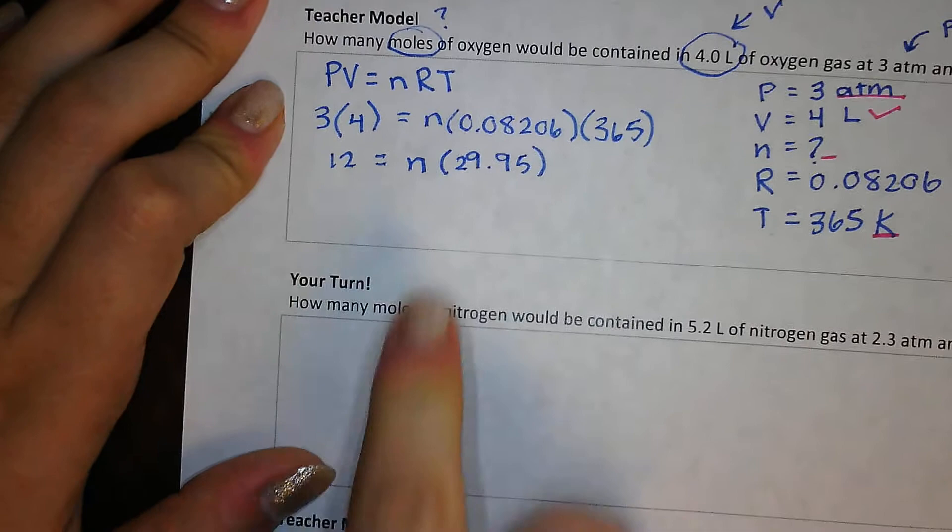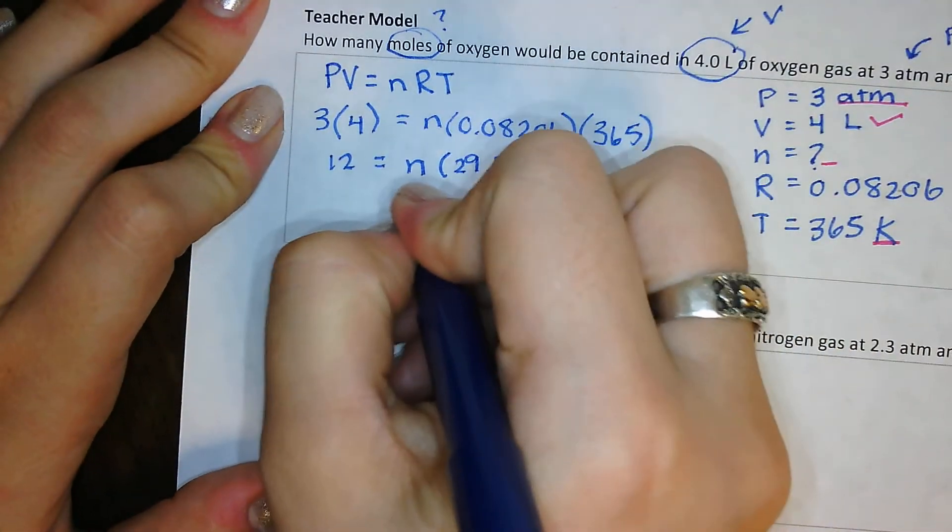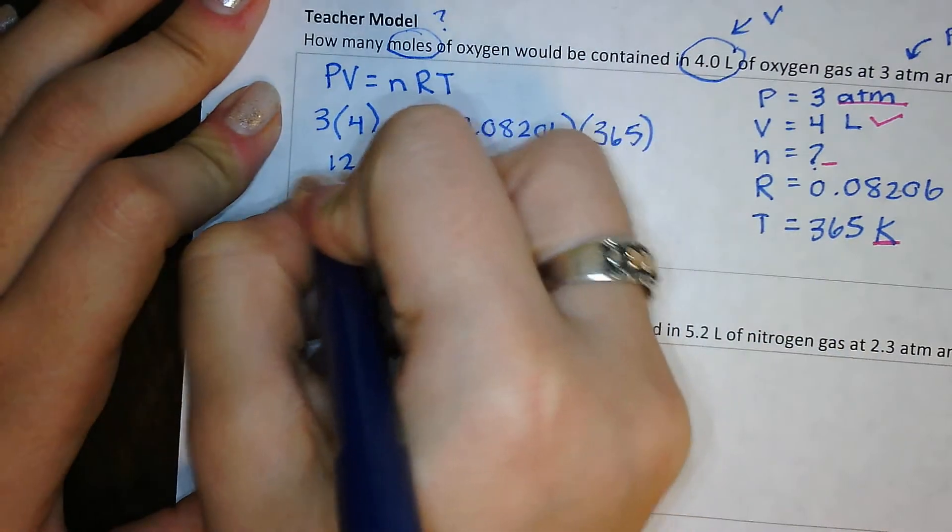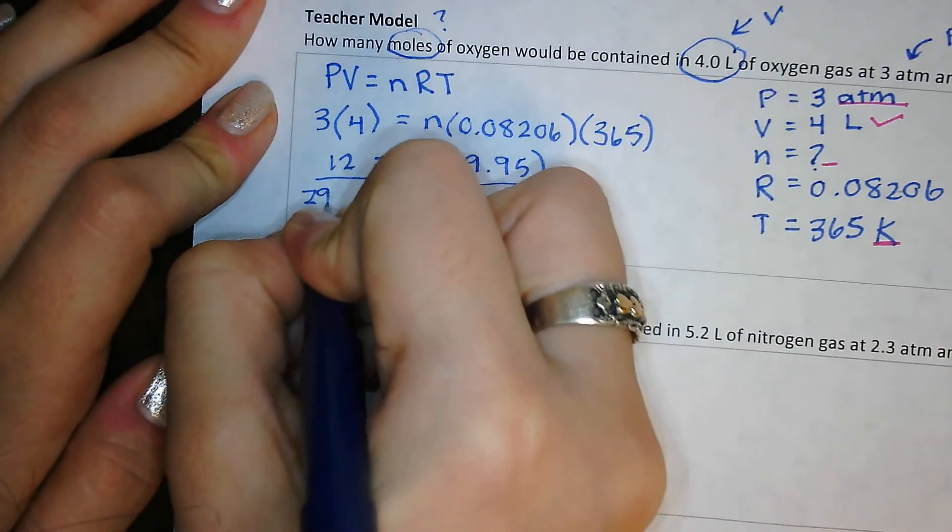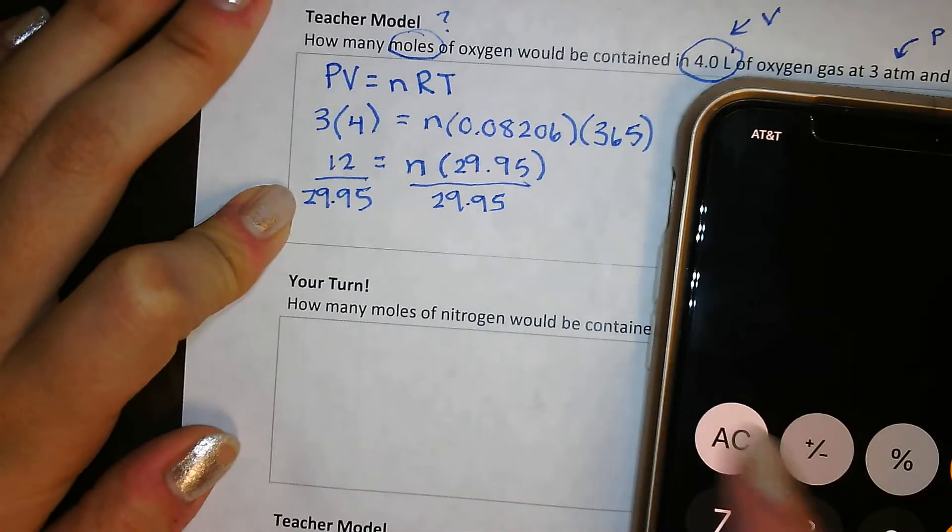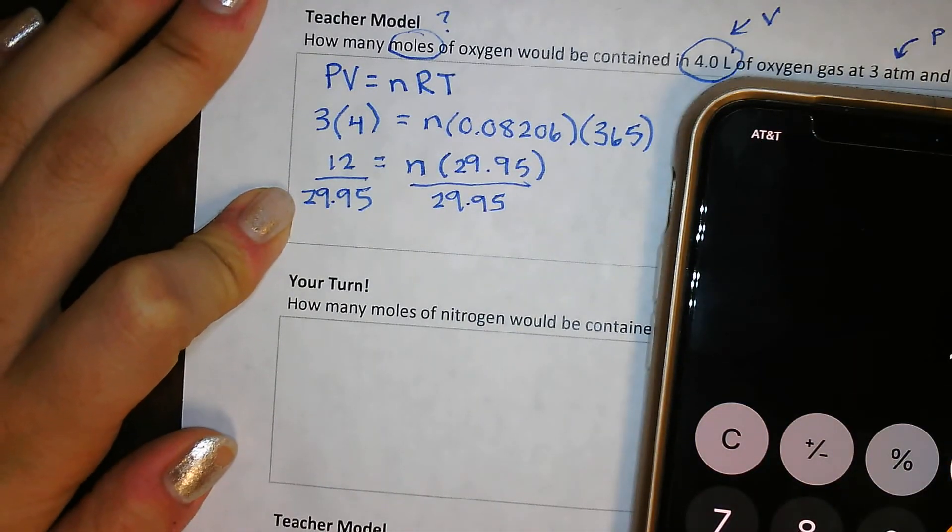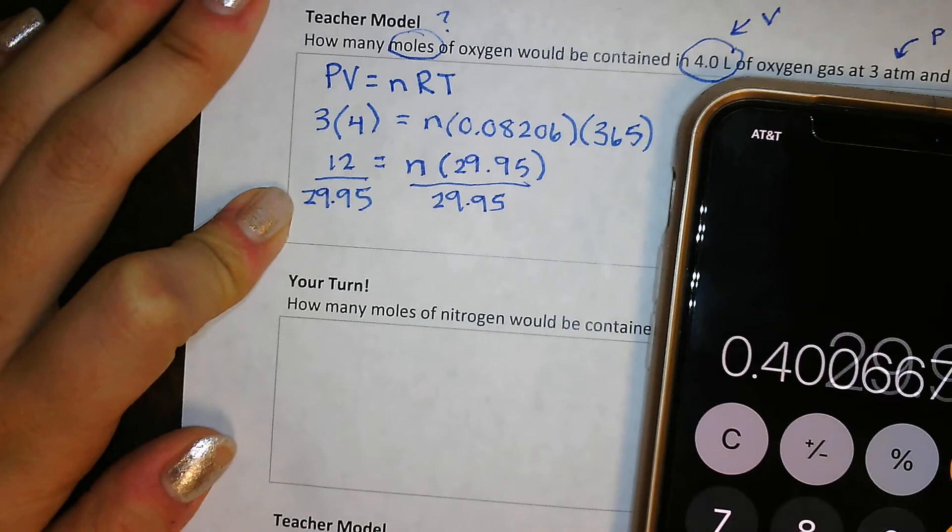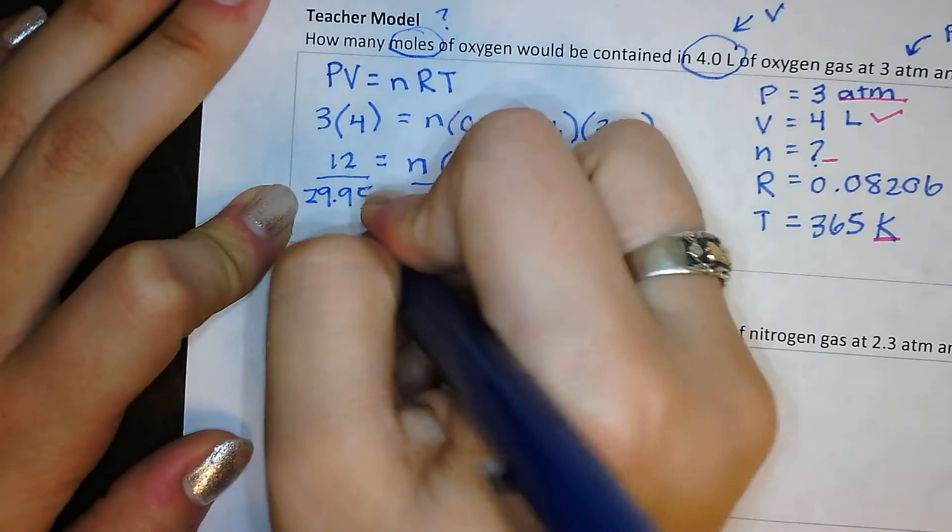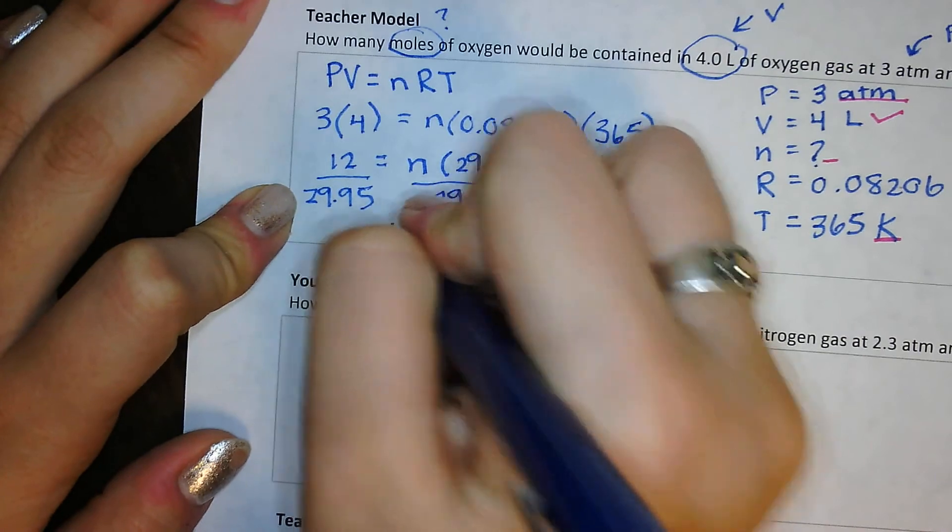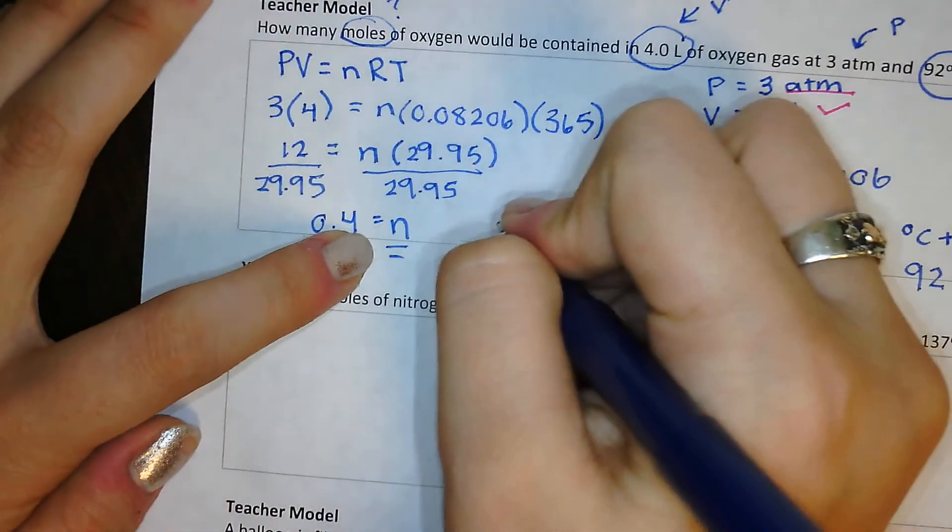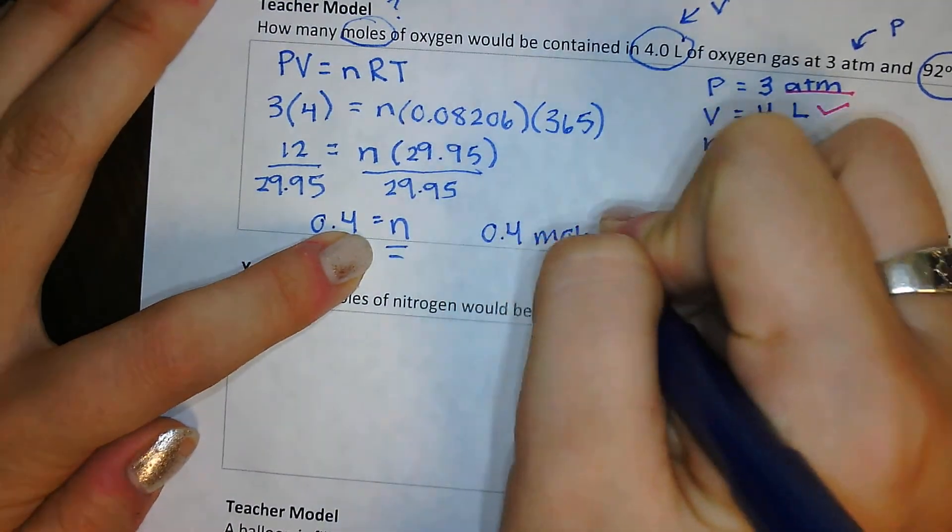And now I need to solve for N. So I'm going to divide both sides by 29.95 to get N by itself. So 12 divided by 29.95. And that's about 0.4. So 0.4 is equal to N. N again is the number of moles. So my final answer is 0.4 moles.